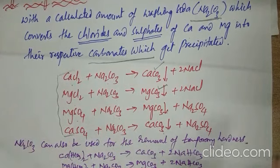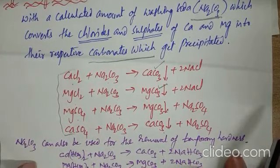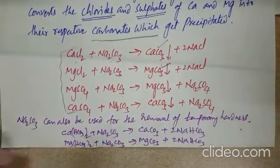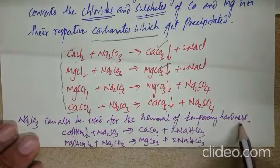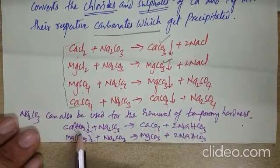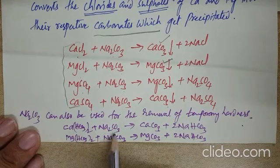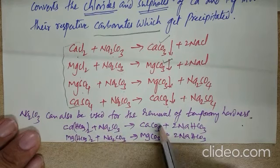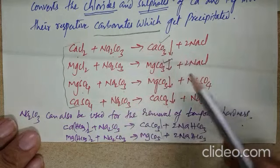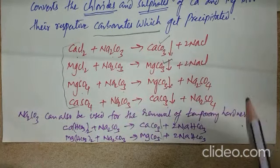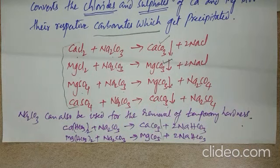In a similar way, by using washing soda we can remove temporary hardness also. Na2CO3 can also be used for removal of temporary hardness. The bicarbonates of calcium and magnesium treated with sodium carbonate give calcium carbonate and magnesium carbonate precipitates. These precipitates can be separated by using filtration. So the competitive exam point is: by using sodium carbonate or washing soda, we can remove temporary hardness as well as permanent hardness.